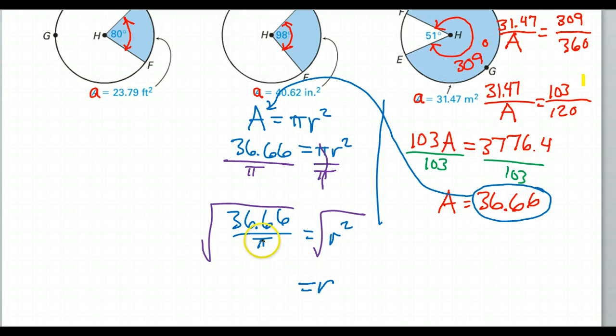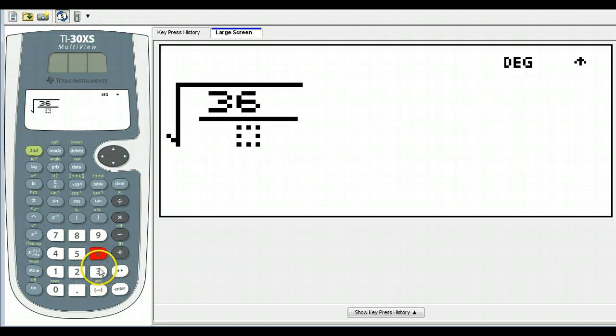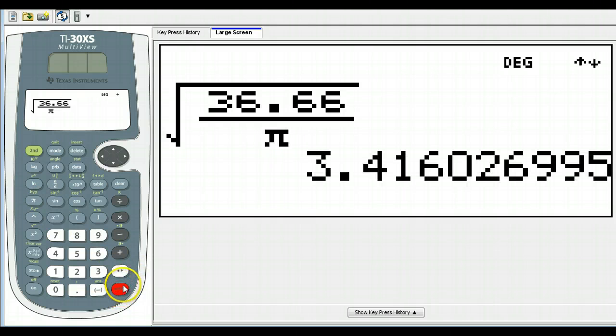So, that's going to give me r equals, let's see, 36.66 divided by pi, square root of all that. Let's see here. Square root, 36.66 over pi. Okay, that gives me 3.42.